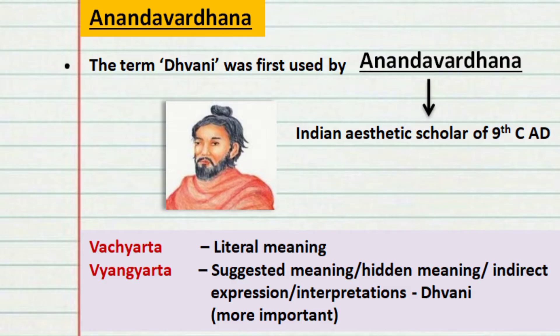According to him, in a work there are always two kinds of meaning: Vajhyartha and Vinyartha. Vajhyartha is the literal meaning — what you understand when you know the grammar and the dictionary meaning of the word. The Vinyartha is the suggested meaning or the hidden meaning. This is known as the Dhvani.